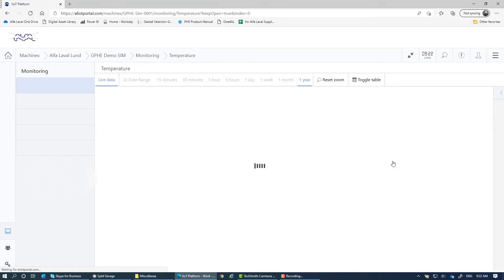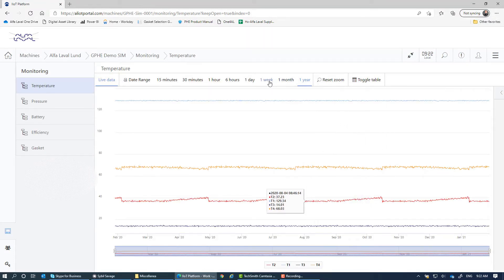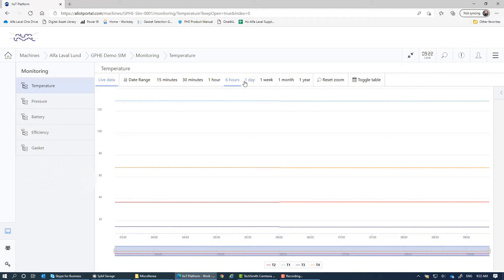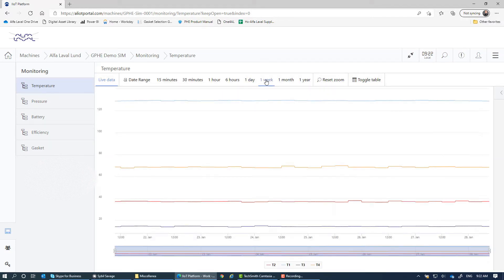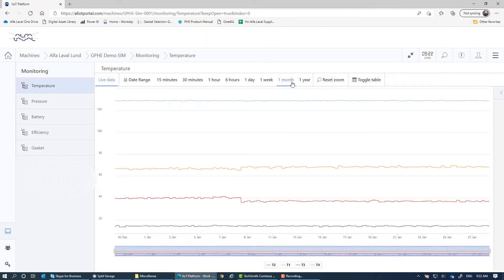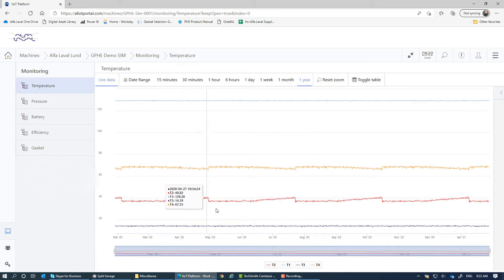And of course you can have these for any kind of different timeframe. So you can have it every six hours, every day, every week, every month and then every year when you really see the cycles.